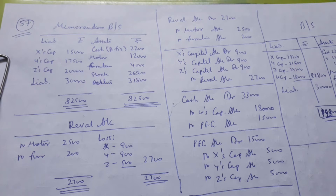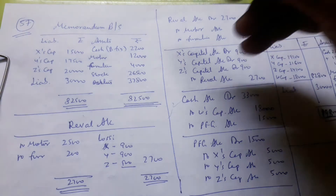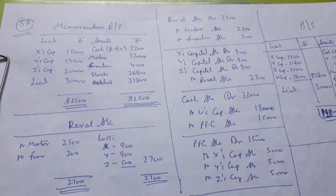I am going to talk to you about Question 57, Admission of a Partner, from the chapter in T.S. Grewal's book.